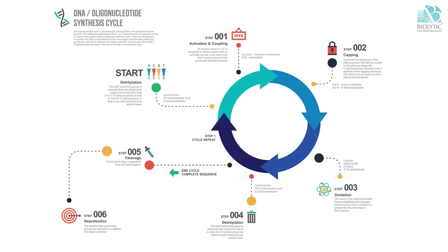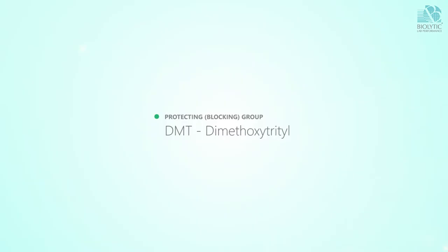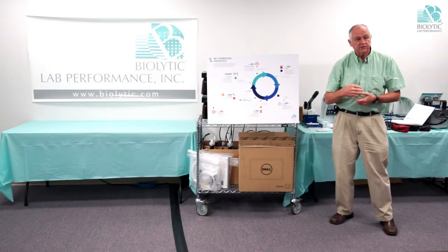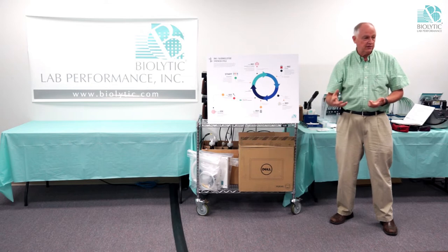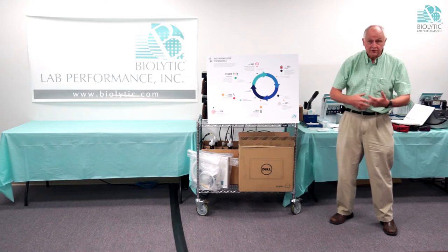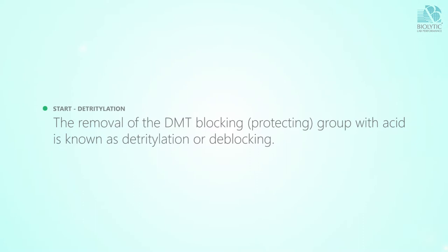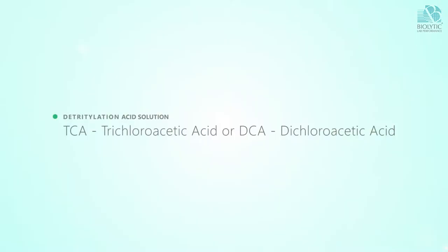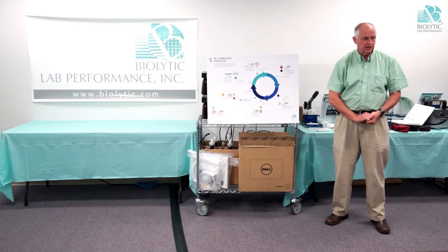The five prime end of each of the nucleosides has a chemical blocking group on it, typically referred to as DMT or dimethoxytritol. That blocking group prevents the five prime end from reacting with anything when we don't want it to. When we want it to react, we have to remove that blocking group — a process called detritylation or deblocking — done with an acid, usually TCA (trichloroacetic acid) or DCA (dichloroacetic acid).